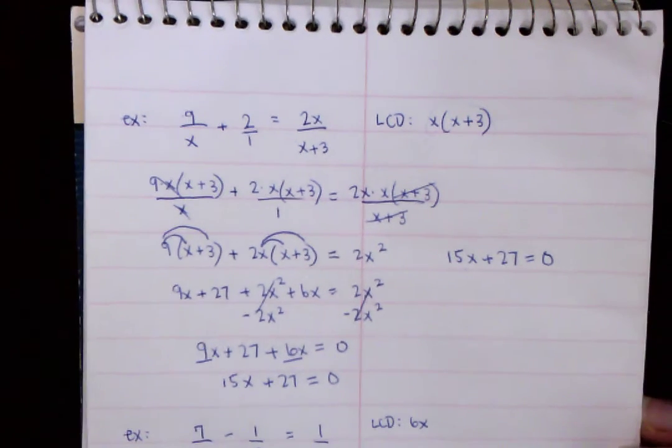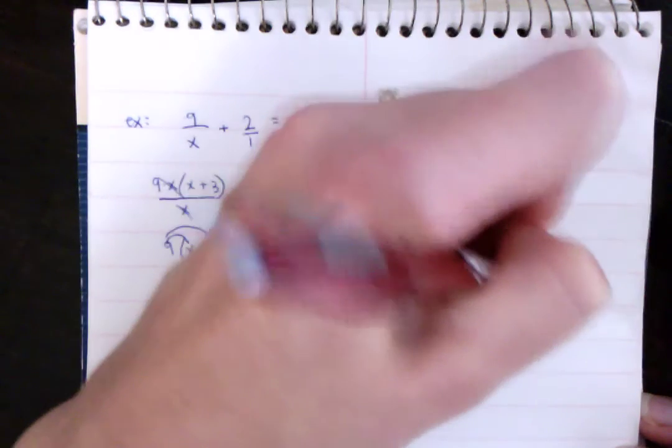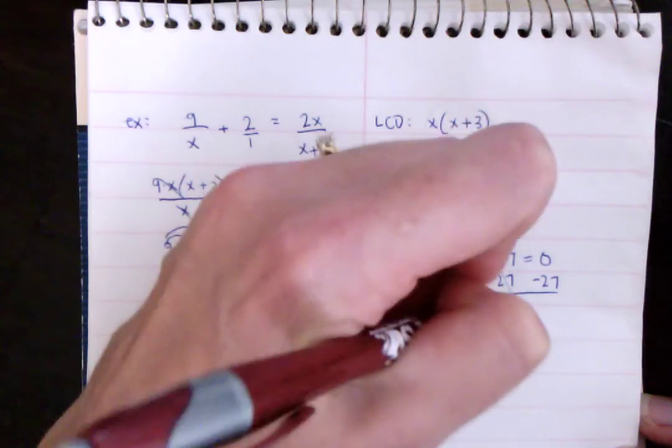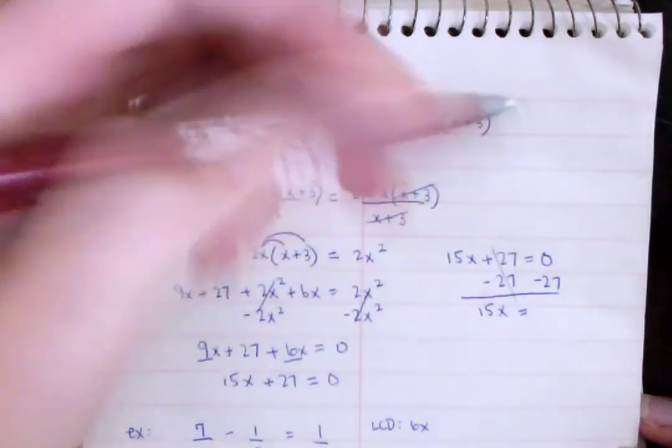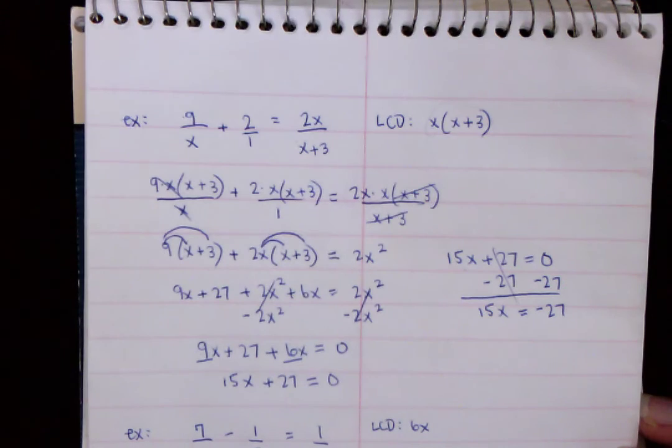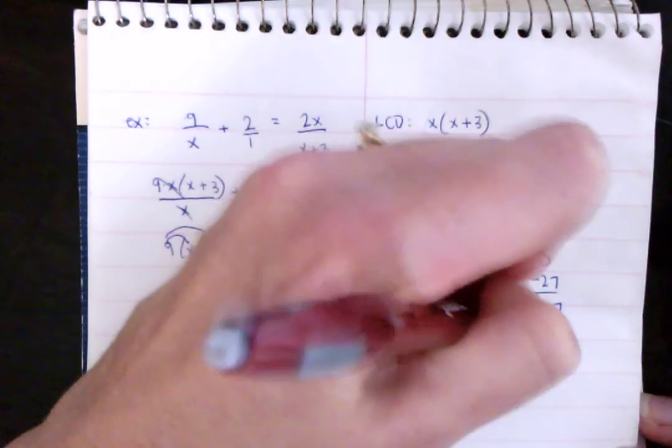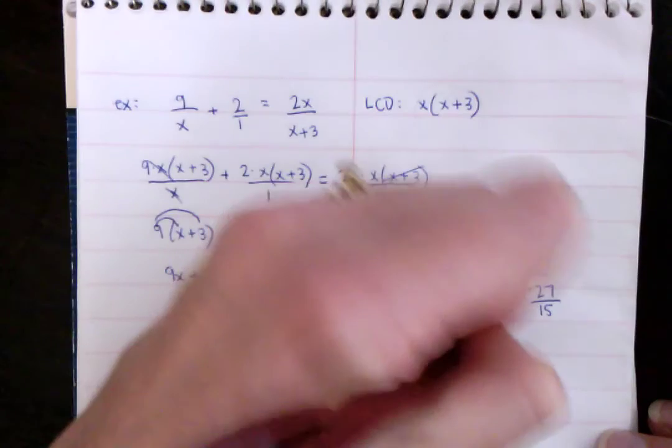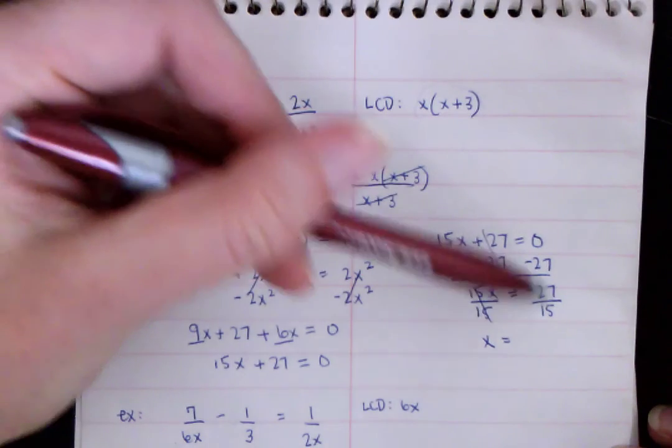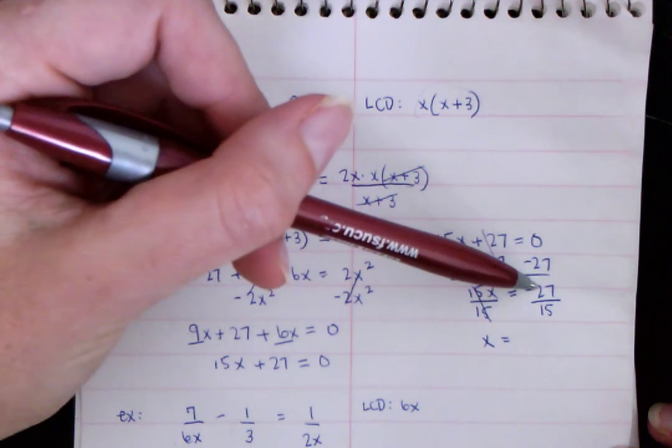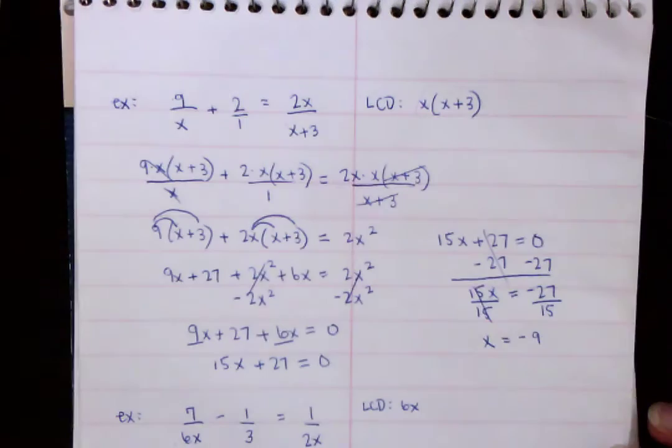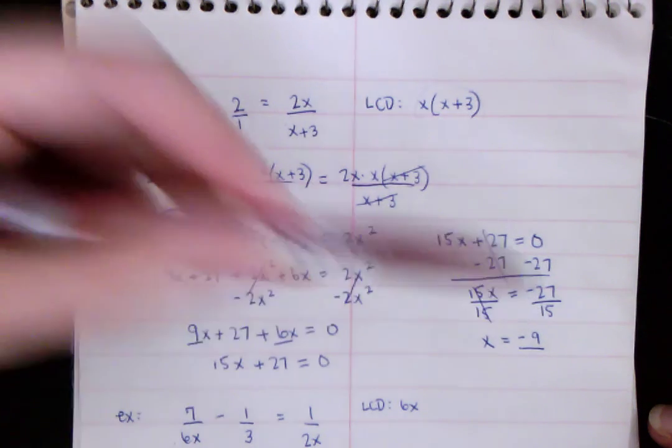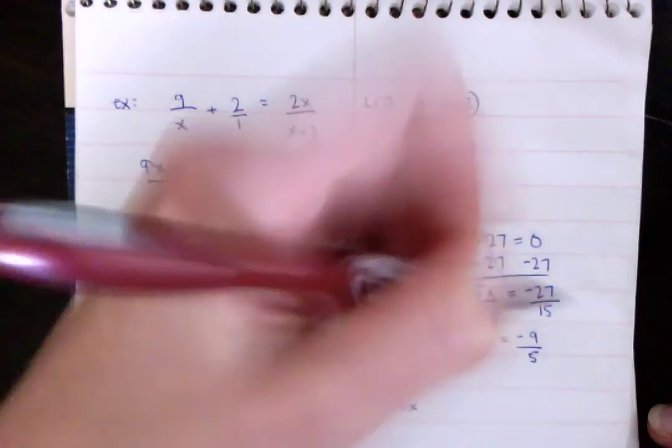So again, I subtract 27 from both sides. Those cancel out. So I get 15X equals zero minus 27 is negative 27. And then the final step is to divide by 15. And I know that doesn't look good, but you're just going to have to reduce the fraction. So I know that a 3 goes into 27 and 15. So I'm going to divide the top by 3 and I get negative 9, because 9 times 3 is 27. If I divide the bottom by 3, I get 5. 15 divided by 3 is 5. So that is your final answer.